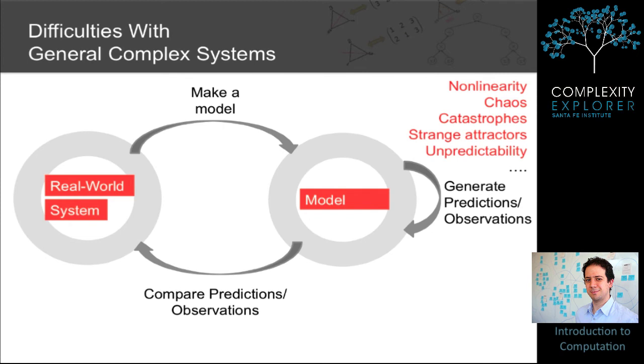Making a model is essentially the entire field of mathematical modeling and covers broad swaths of applied mathematics and science. Understanding the model is difficult mathematics, and this is where we run into things like nonlinearity, chaos, strange attractors, and unpredictability. And even comparing the predictions or observations of the model with the real world can be difficult, particularly when the real world system is something you can't run experiments on, like an economy or an ecosystem.